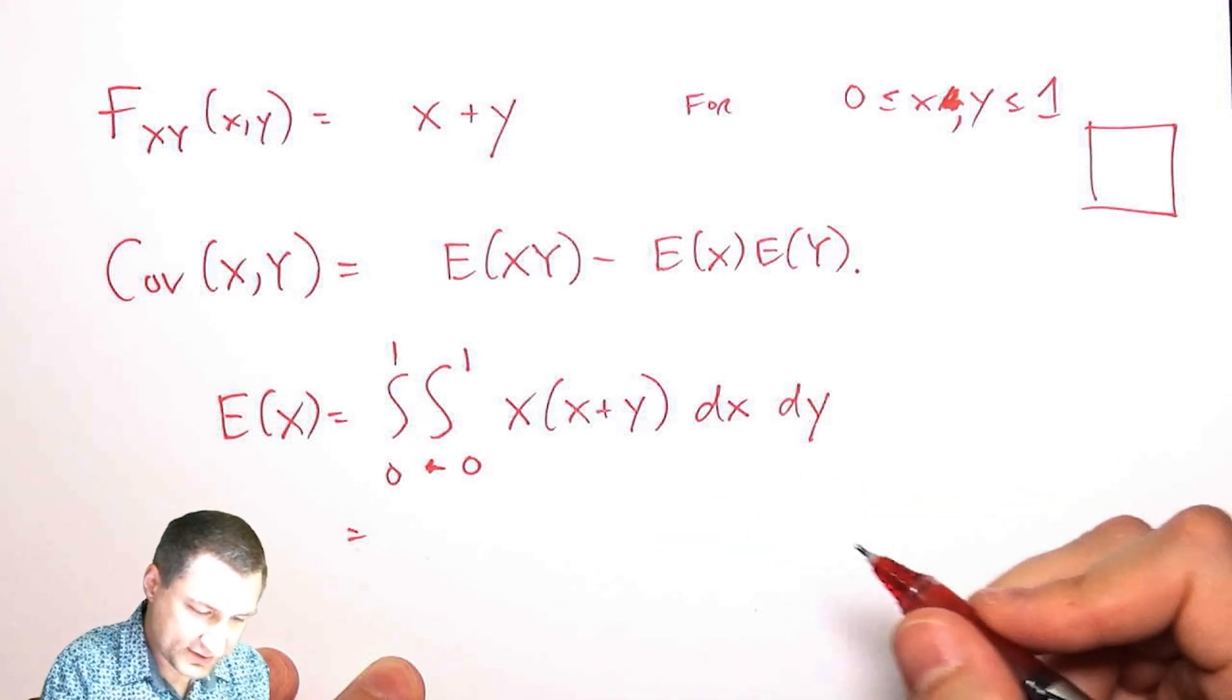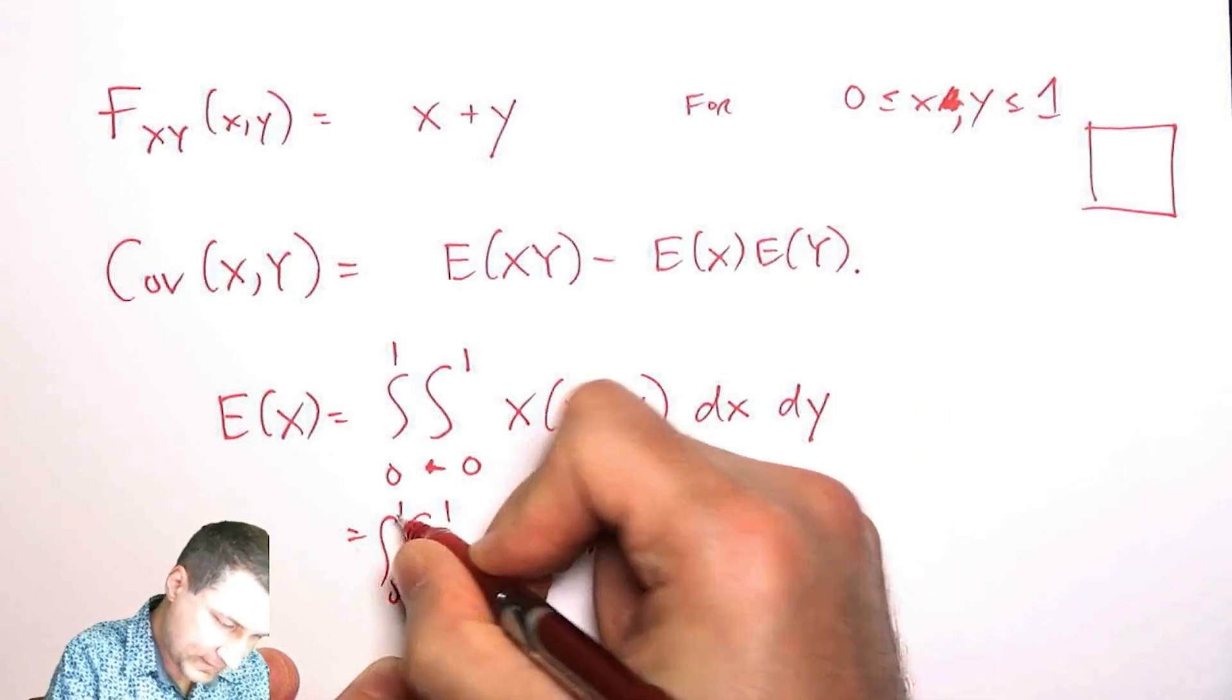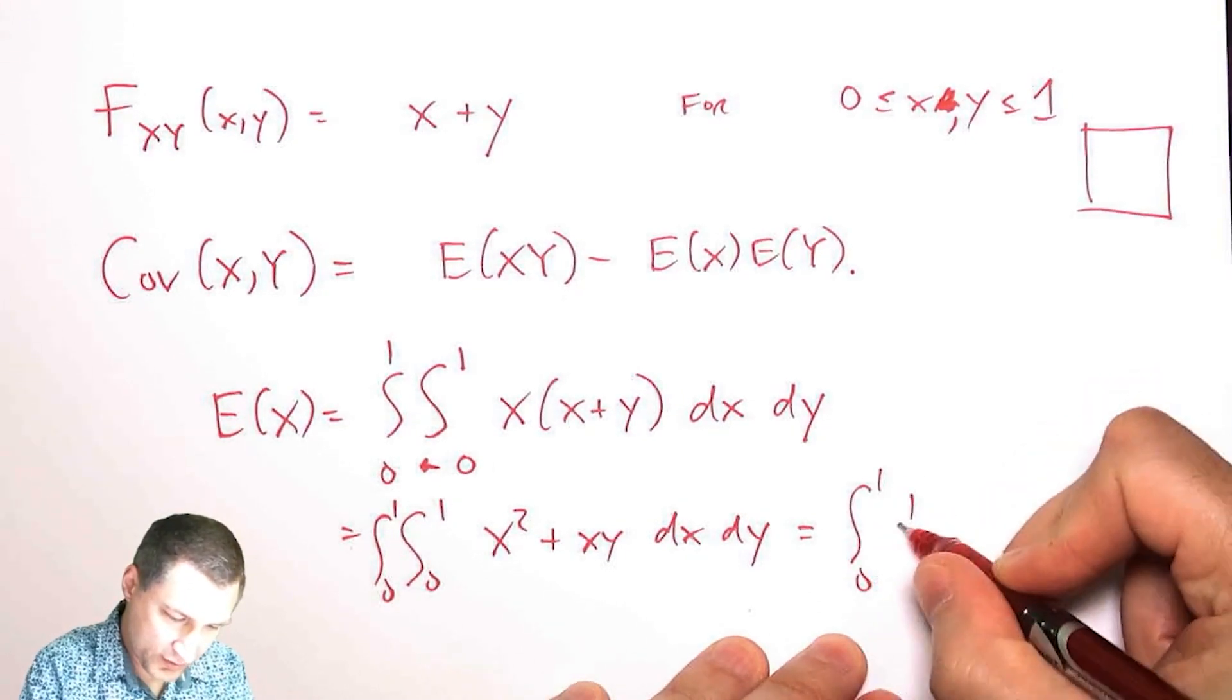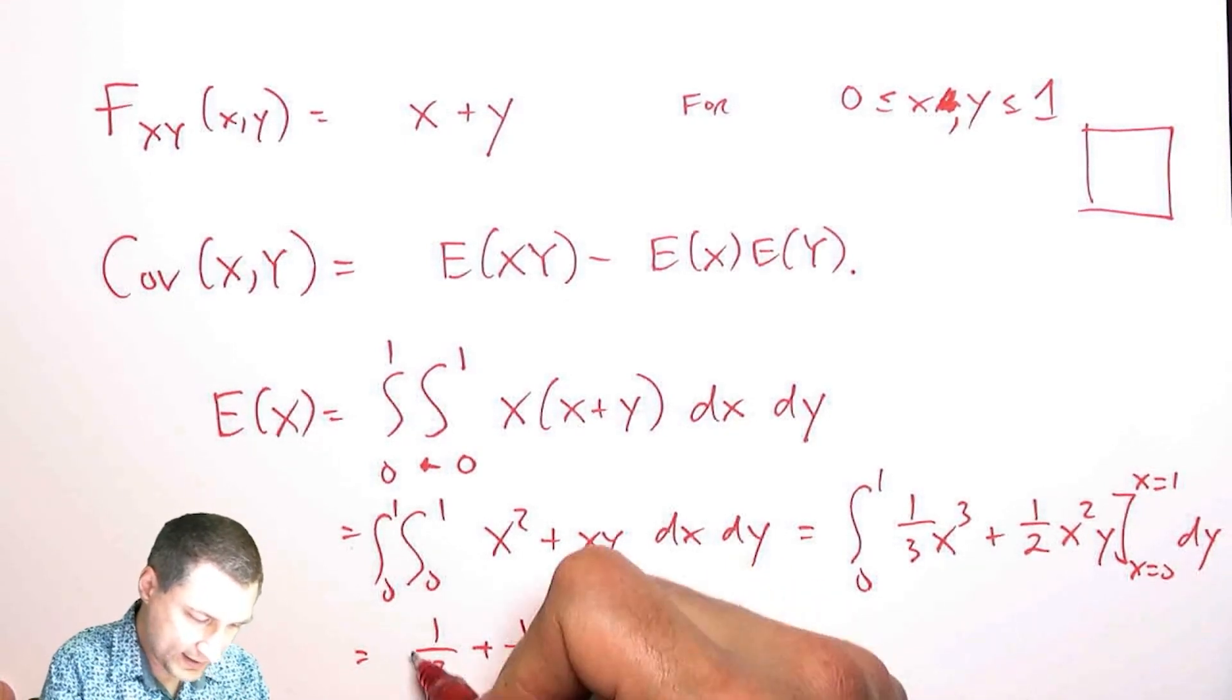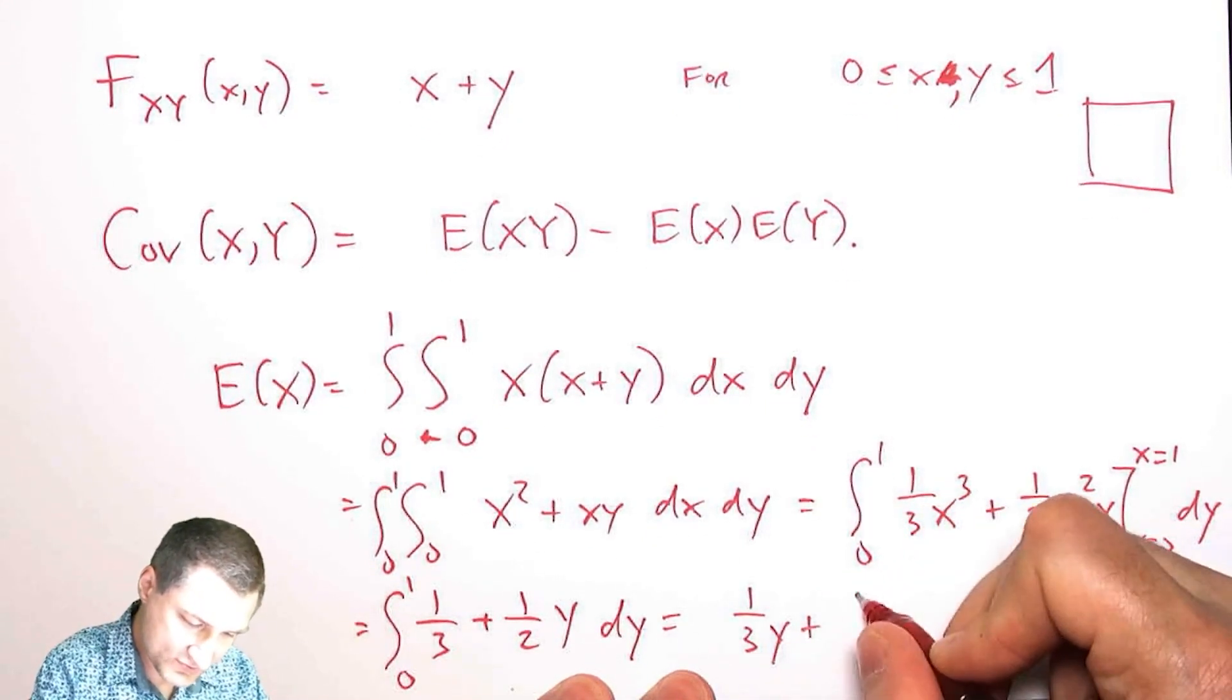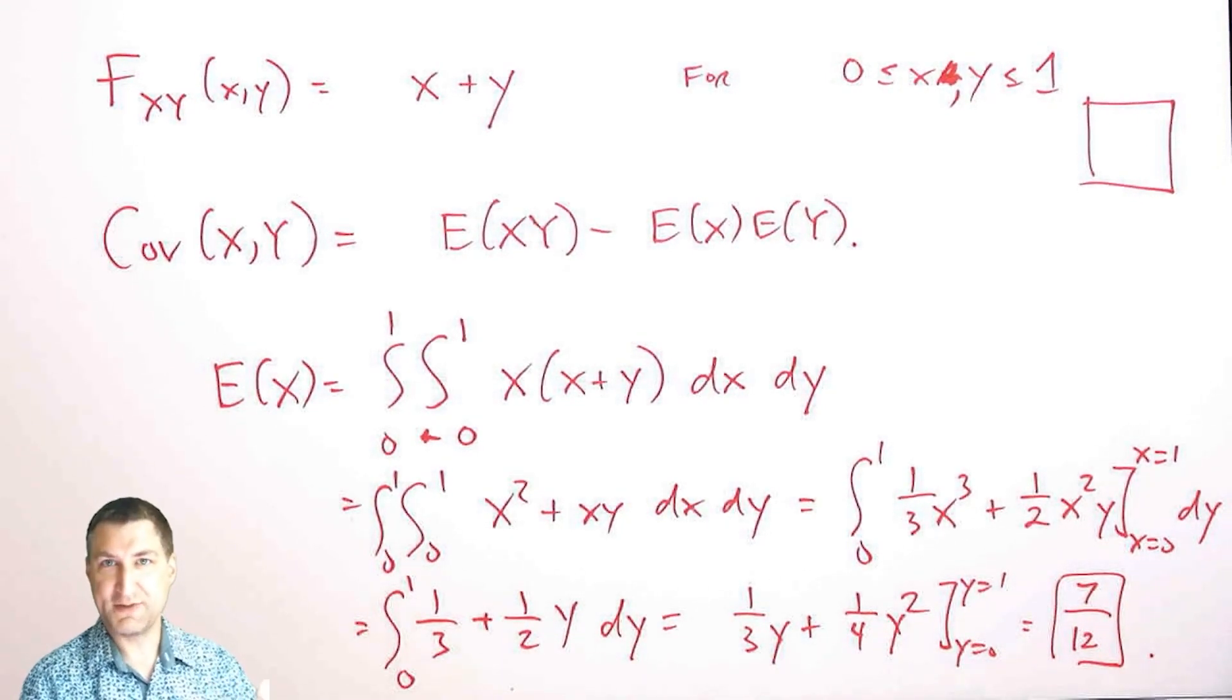So I have basically, let's do the X integral first. So that means that I have one third X cubed plus one half X squared Y from X equals one to X equals zero DY. So that's equal to one third plus one half Y. Integrate that from zero to one DY. And there I have one third Y plus one quarter Y squared from Y equals one to Y equals zero. And that's one third plus a quarter is seven twelfths. So that's my expected value of X.